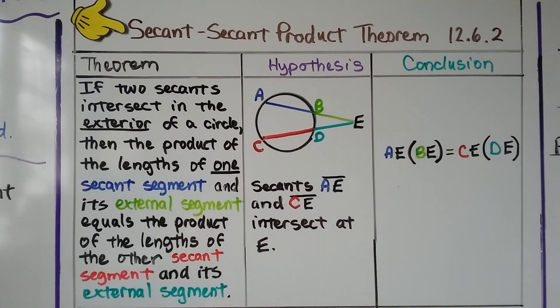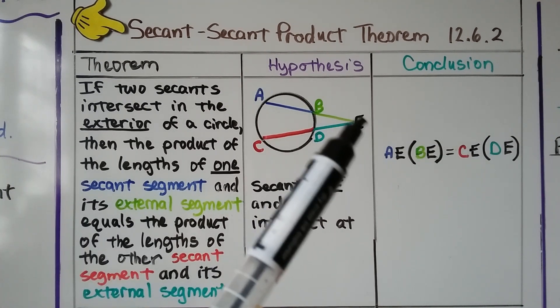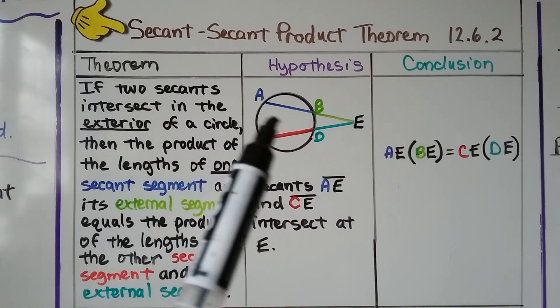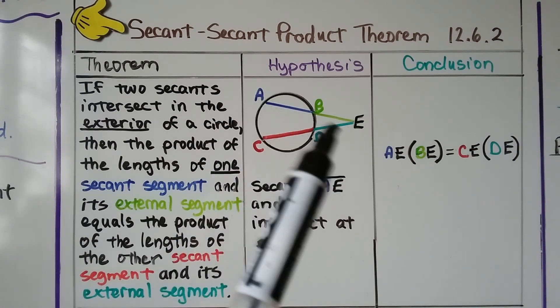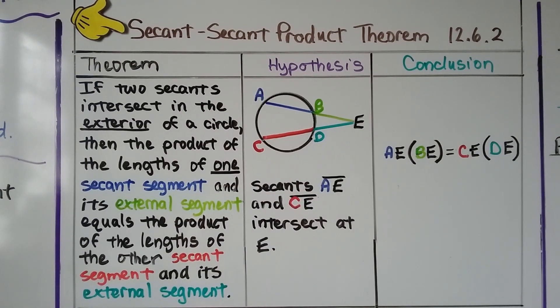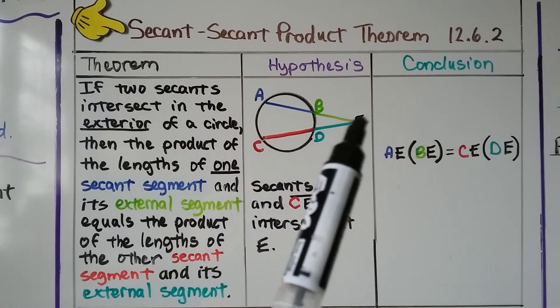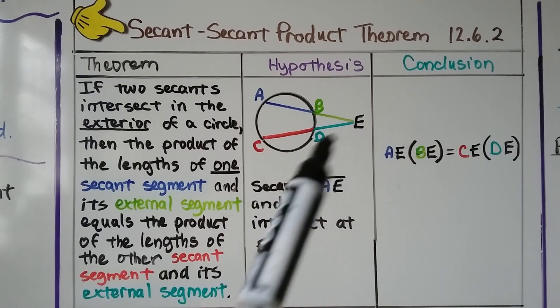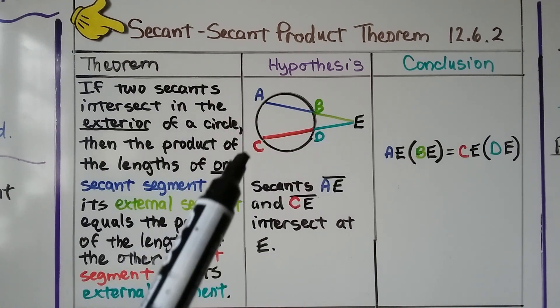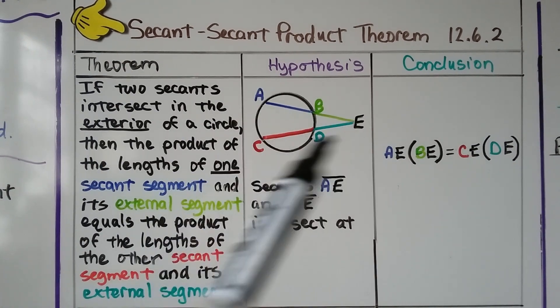For your notes, we have the secant-secant product theorem, theorem 12.6.2. The theorem says if two secants intersect in the exterior of a circle, then the product of the lengths of one secant segment and its external segment equals the product of the lengths of the other secant segment and its external segment. Secants AE, this whole thing, and CE, this whole thing, intersect at E.